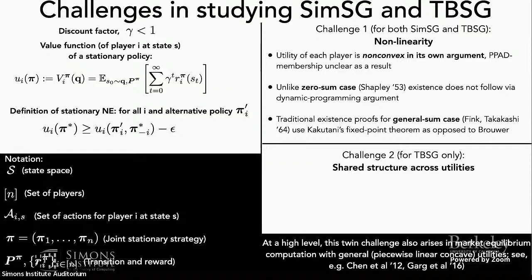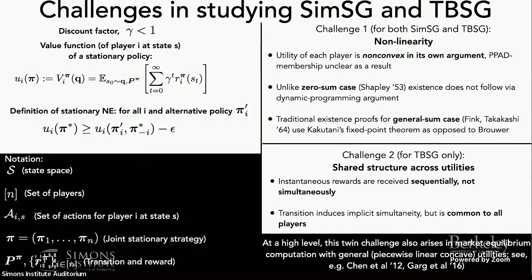The second challenge, intertwined with non-linearity but distinct in nature, is that there's a lot of shared structure across utilities. In the TBSG setting, rewards are received sequentially and not simultaneously, and they don't directly interact. The fact that you have transitions and restrict to stationary equilibrium induces a type of implicit simultaneity. Nevertheless, there's significant shared structure across the induced utility functions — we do not have the freedom of a normal form game where utilities can be changed completely arbitrarily.